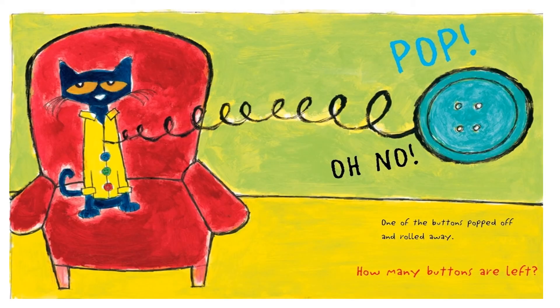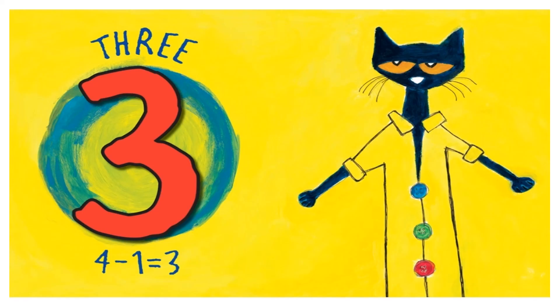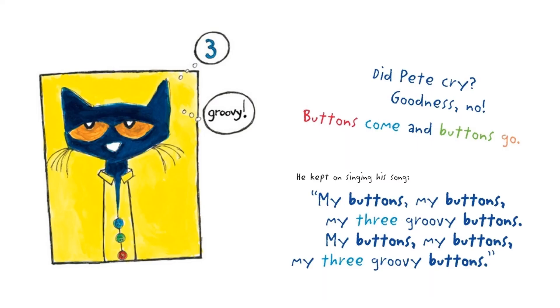Pop! Oh no! One of the buttons popped off and rolled away. How many buttons are left? Three. He had four buttons, then one popped off and that equals three. Did Pete cry? Goodness, no! Buttons come and buttons go. He kept on singing his song.